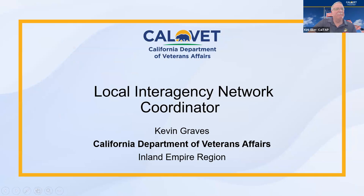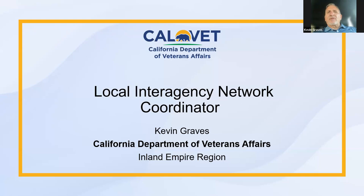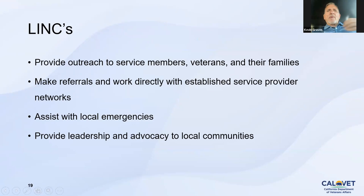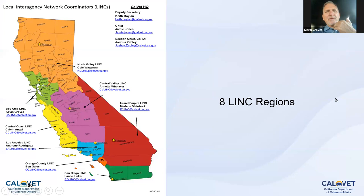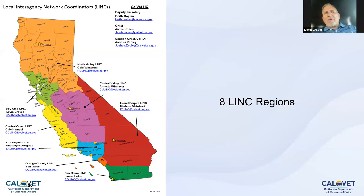Hey, everybody. I would like to welcome you all to the webinar today. So there are eight LINK regions within the state, and therefore eight of us that cover about 1.3 million veterans within the state of California. We all know our own regions better than we know other regions. My region happens to be the Bay Area — the green region in the middle of the state. I've got 10 counties that I am responsible for, and I definitely know the resources available there better than, say, the ones down in the Inland Empire.